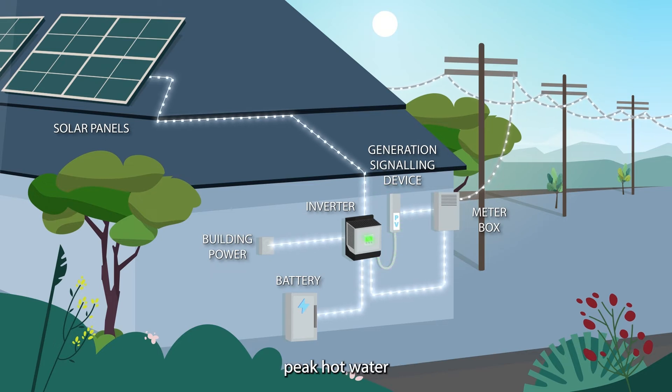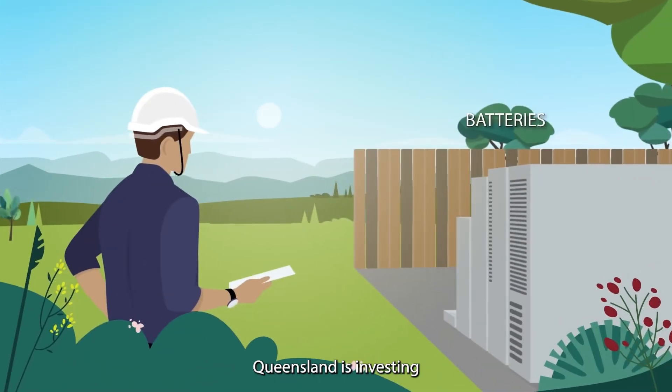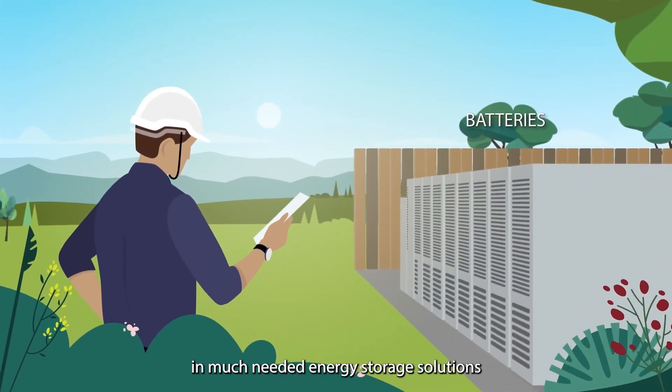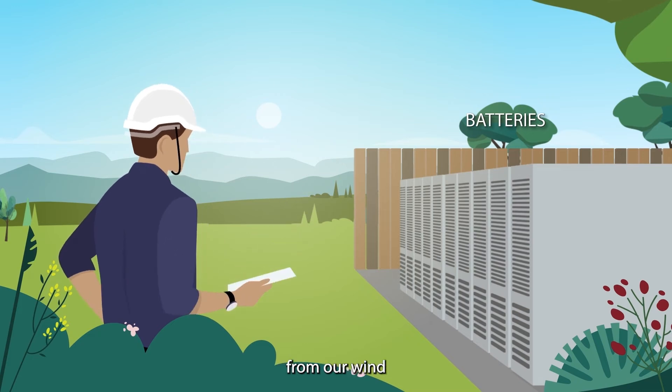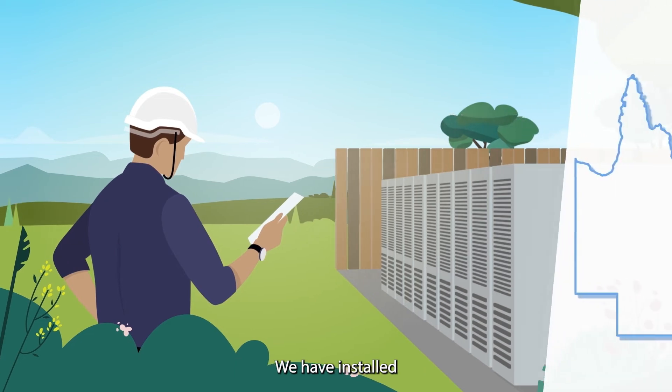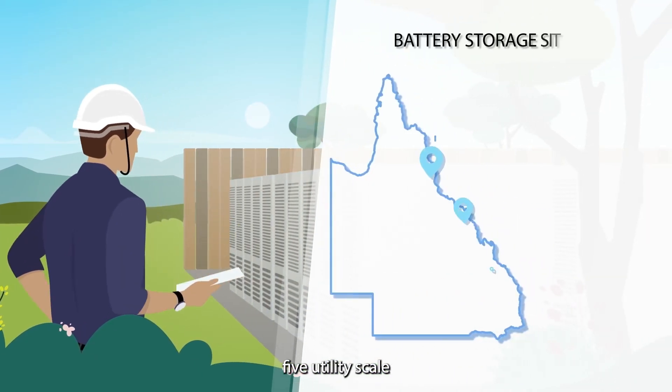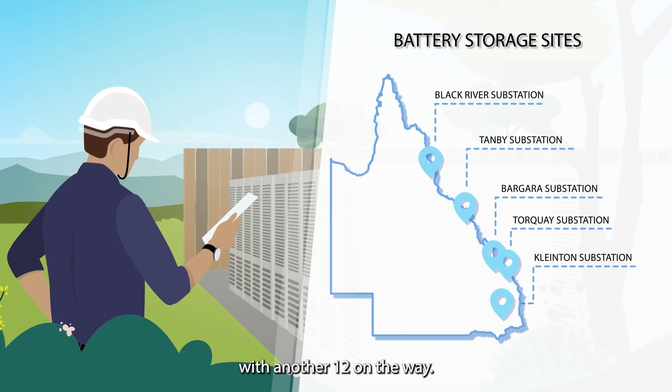Just as many off-peak hot water and pool pumps can be turned off during peak times, Queensland is investing in much needed energy storage solutions which retain energy generated from our wind and solar resources for times when it is needed. We have installed five utility scale grid connected batteries across Queensland with another 12 on the way.